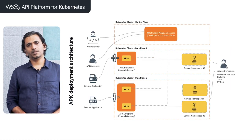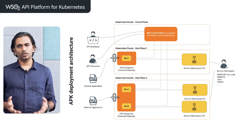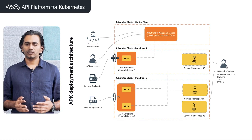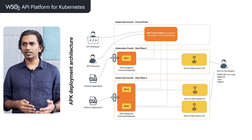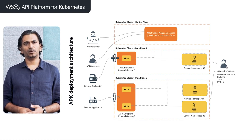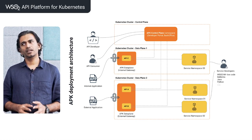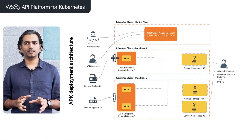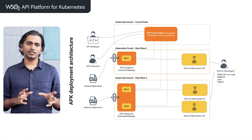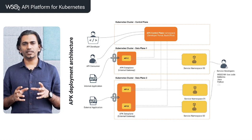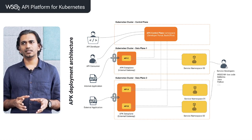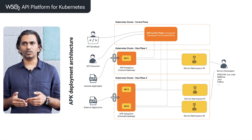Next, we will discuss the deployment aspect of APK. WSO2 APK is designed to deploy in cloud-native architectures, and scalability is a very important factor when considering this kind of cloud architecture. When you consider the scaling part, there are two main reasons we need to scale these systems. Number one is how you handle API requests — let's say you are suddenly getting 10,000 API requests.